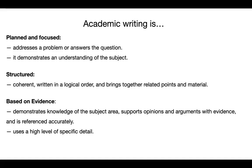First, what exactly is academic writing? First of all, it's always planned and focused — you always have to do a lot of planning to get it to work. Good academic writing always addresses a problem. Sometimes a problem is simply a question you have to answer, but it's a problem. It always demonstrates an understanding of the subject. Whoever writes academically understands what they're talking about in a way that makes readers appreciate it. Secondly, it's always very coherent, meaning all the parts hold together, written in a logical order, bringing a lot of different related points and material into one place.